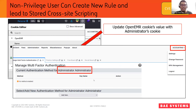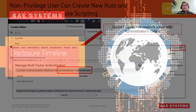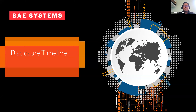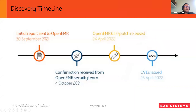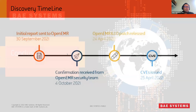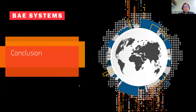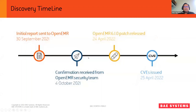Let's go through the disclosure timeline. We initially reported the findings in September 2021 and received back-and-forth emails from the OpenEMR security team up to at least October 4th, 2021. After which they said the release of patches will come in batches. It was only on April 24th, 2022 that all 60-plus bugs — plus the eight CVEs — were fully patched. Only then did we start triaging them through Mitre to get the CVEs issued.